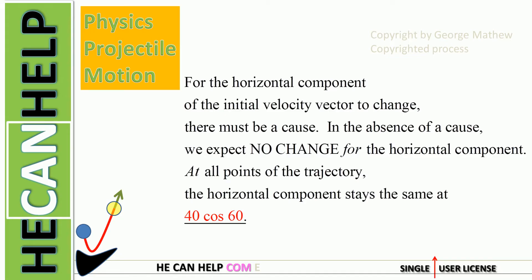For the horizontal component of the initial velocity vector to change, there must be a cause. What is the cause? Along the vertical, you have the pull of the earth. Along the horizontal, what is the cause? Nothing.